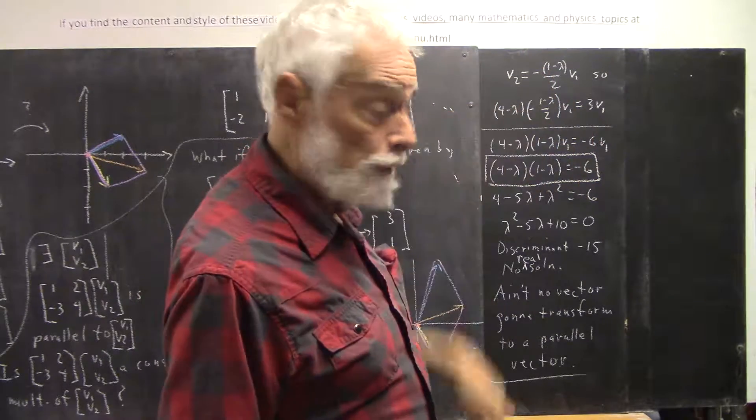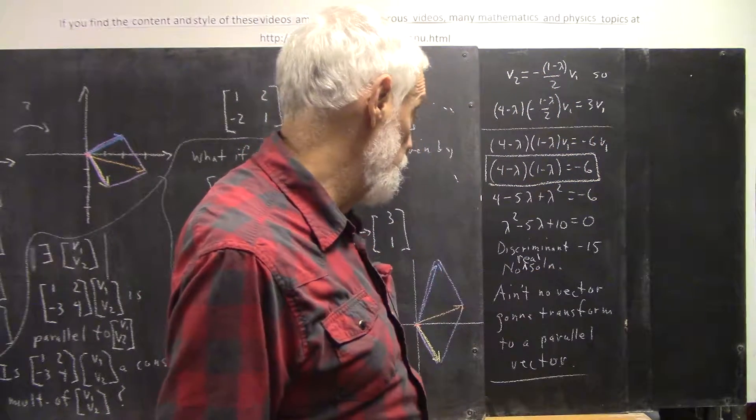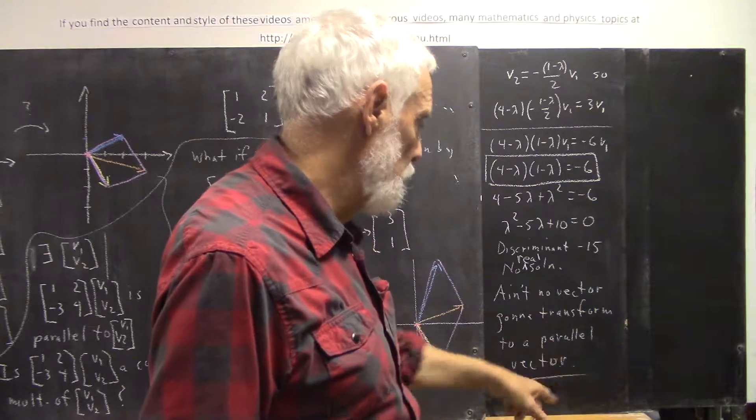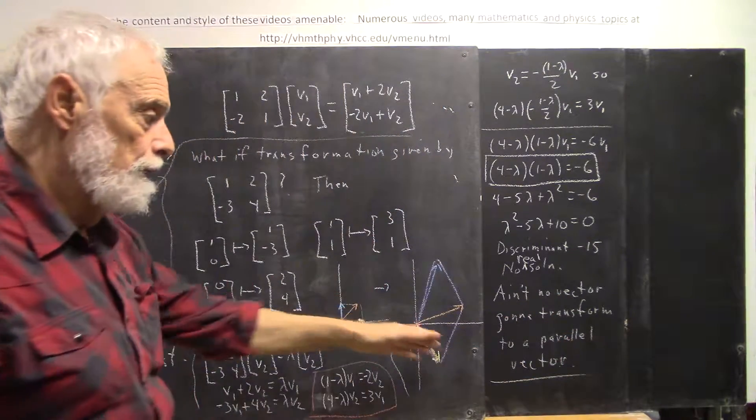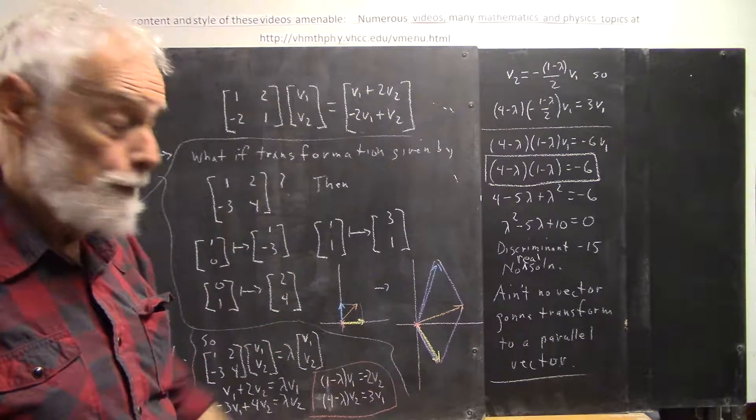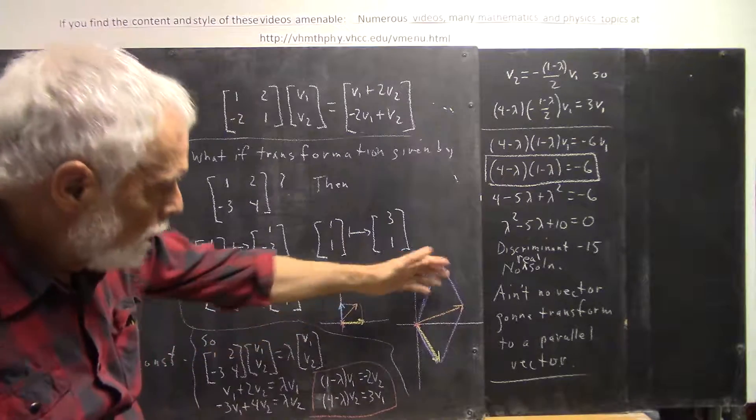This doesn't have a solution because the discriminant is negative. There's no real solution. Ain't no vector going to transform to a parallel vector. That's our conclusion here. And that's cut and dry, airtight. If we've done the arithmetic right, we have determined that there's no way.